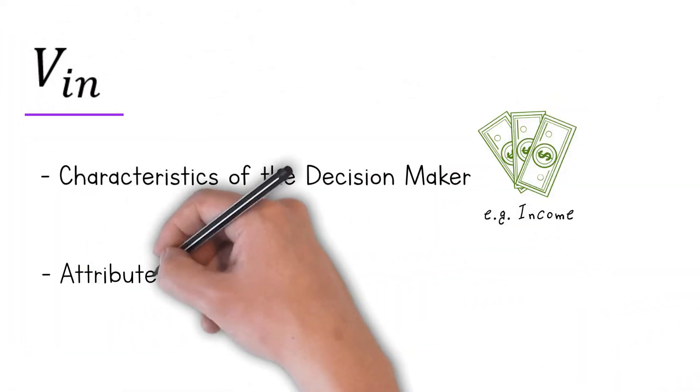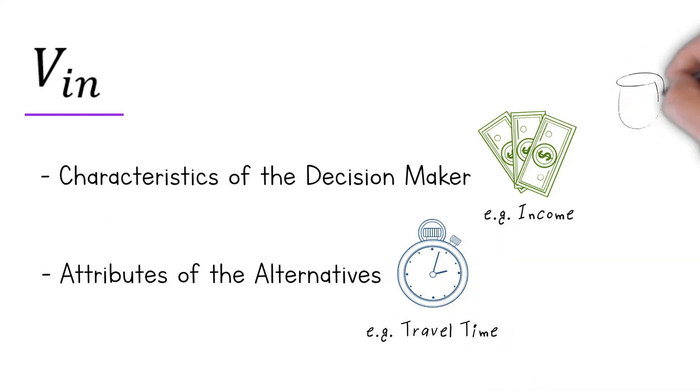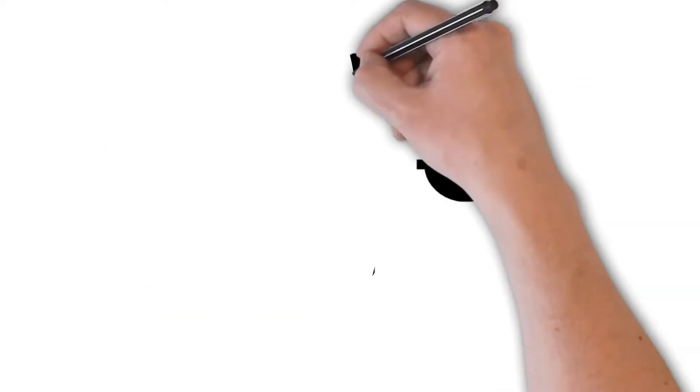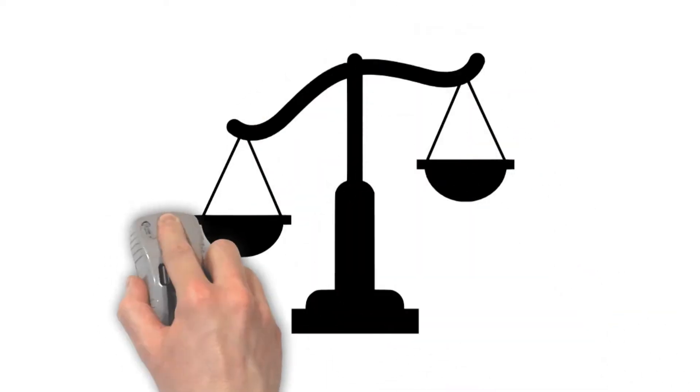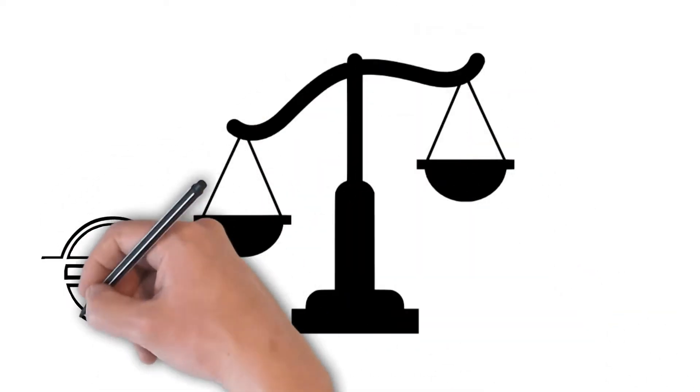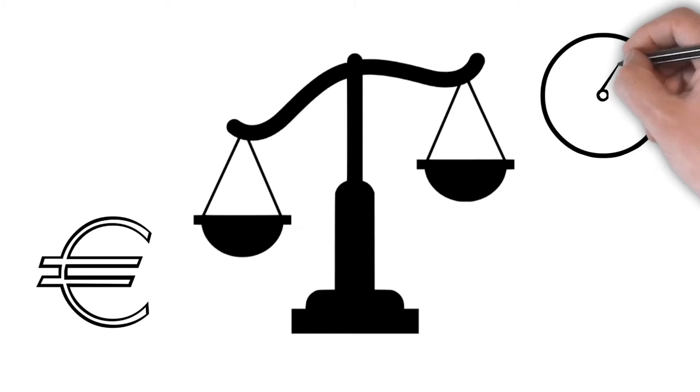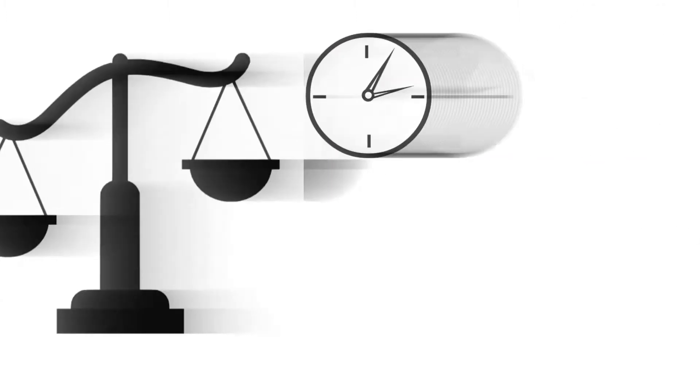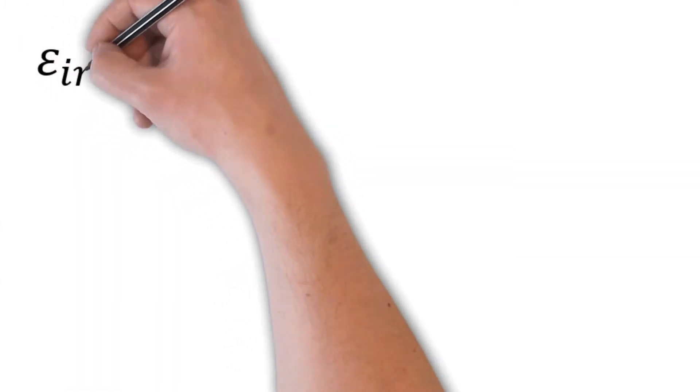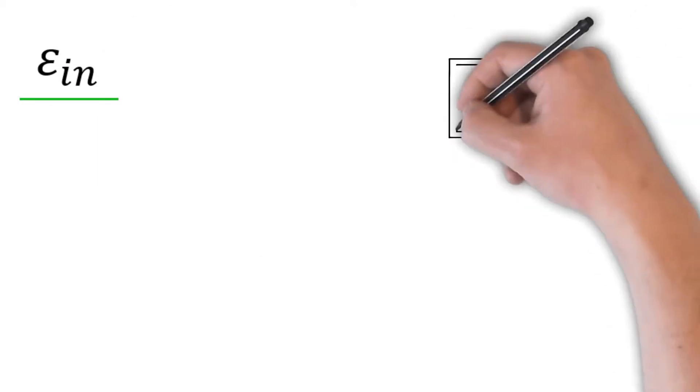V will be formed by the characteristics of the decision maker, the attributes of the alternatives, and how the individual evaluates each alternative. For a person with a low income, the cost will be a determining factor, but for a person with a high income, the important attribute will be the time.